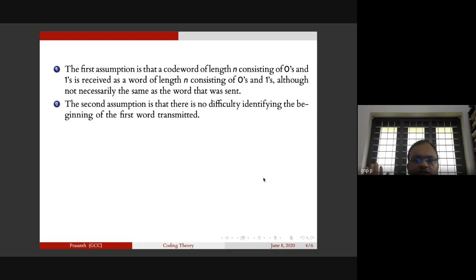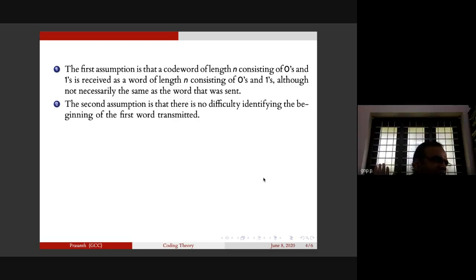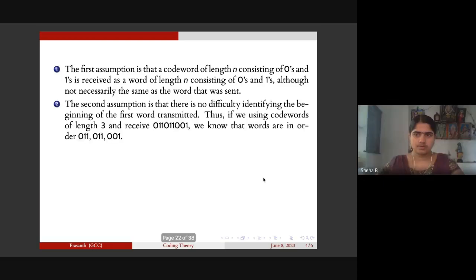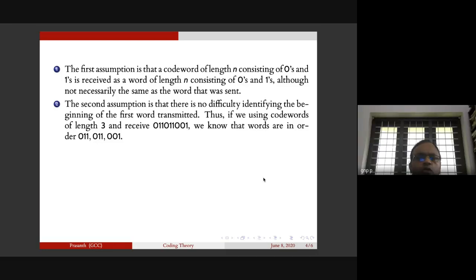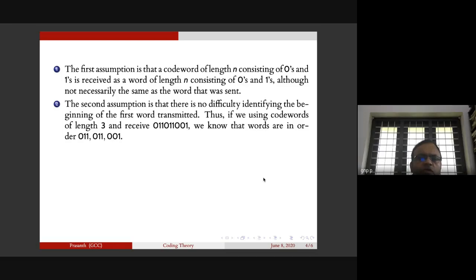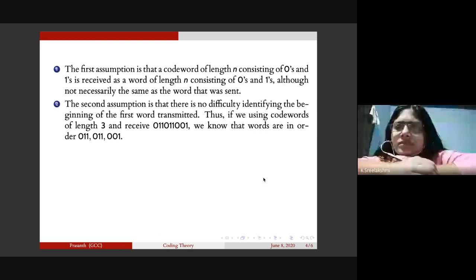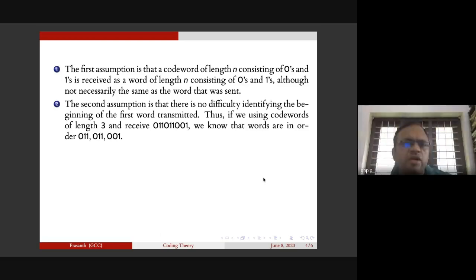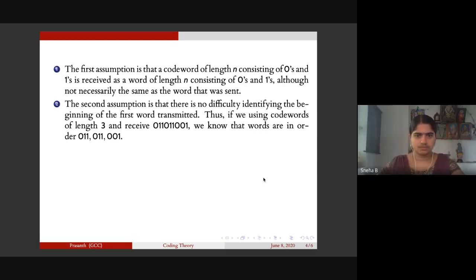The second assumption is that there is no difficulty in identifying the beginning of the first word transmitted. Thus, if we use code words of length three and receive 011010001, we know that the words are in order: 011, 010, 001. We usually move from left to right.